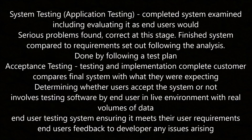System application testing involves examining the complete system including evaluating it as end users would. Serious problems are found and corrected at this stage, and the finished system is compared to requirements set out following the analysis. Acceptance testing is testing the complete implementation, comparing the final system with what the customer was expecting. This determines whether users accept the system or not, and it involves testing the software by end users in a live environment with real volumes of data. The end users feed back to the developer any issues arising.